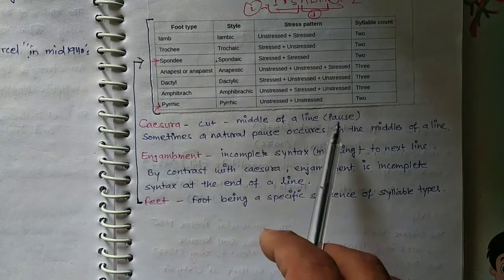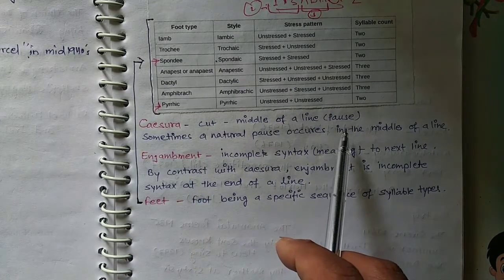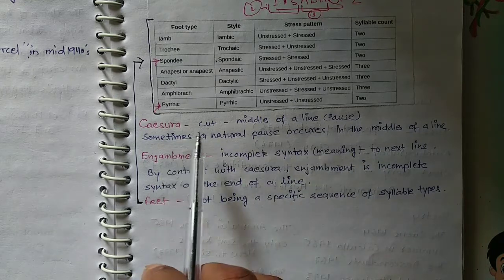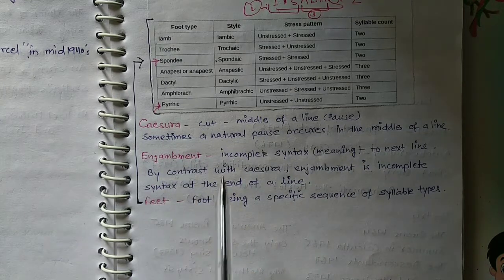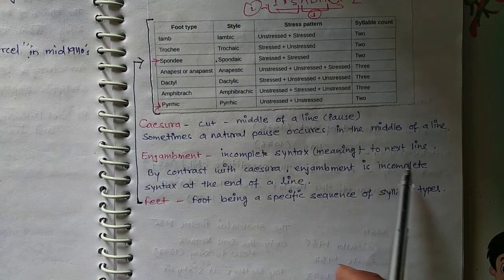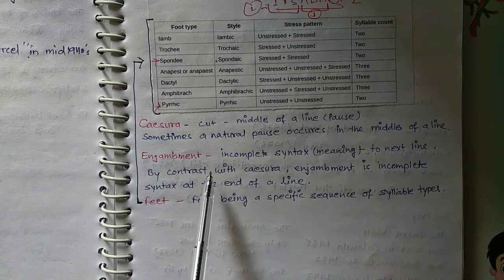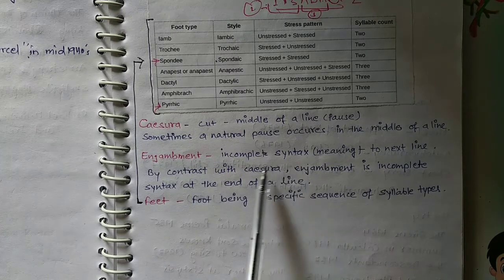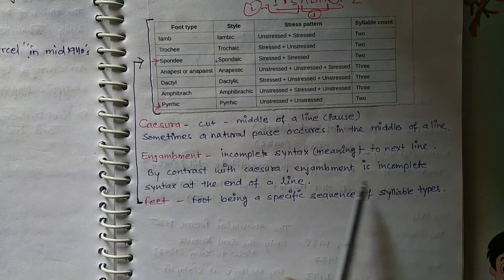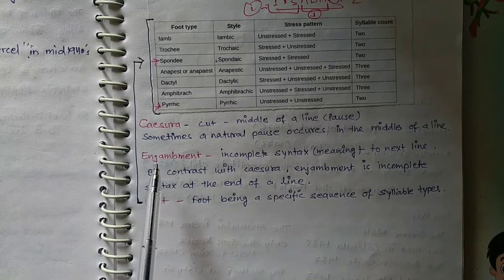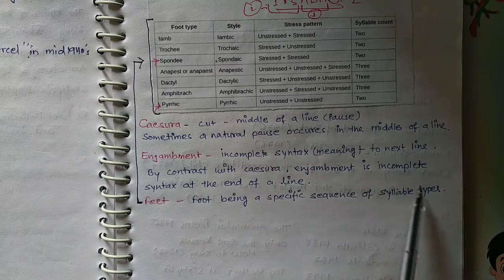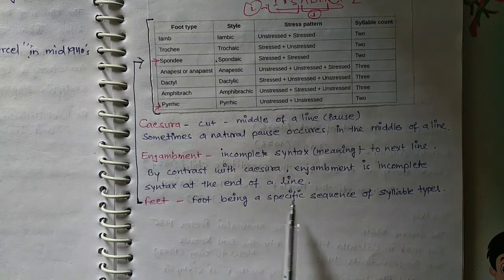Enjambment is incomplete syntax, meaning to next line. So if you will see any incomplete syntax and you will get meaning from the next line, you will see enjambment there. The contrast with caesura: enjambment is incomplete syntax at the end of a line.